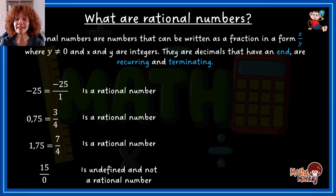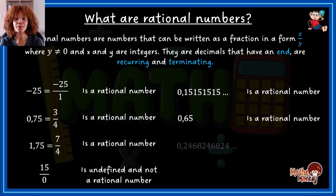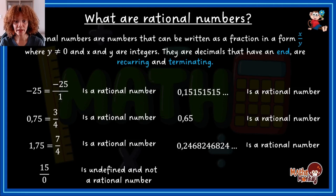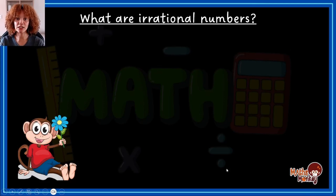Looking at rational decimals: 0.1515... — the 15 is recurring, meaning it repeats over and over, so that's a rational number. Then 0.65 — it doesn't continue on and on, it comes to an end, making it rational. And 0.2468246824... — there's a clear pattern, so that is considered a terminating decimal and is also a rational number.